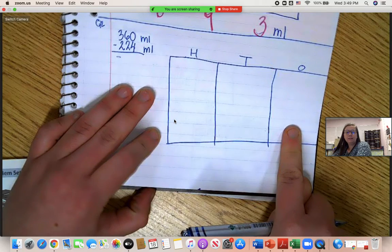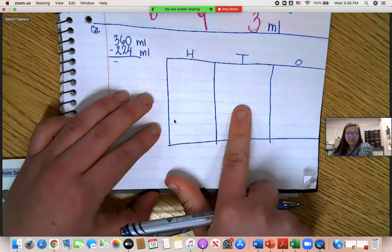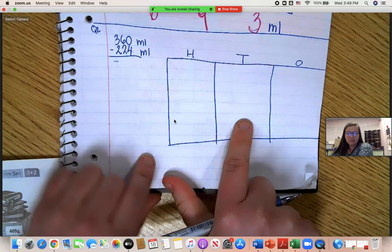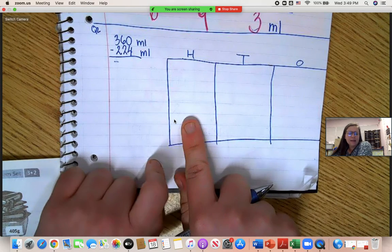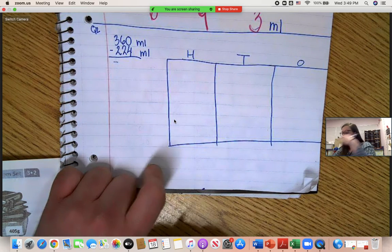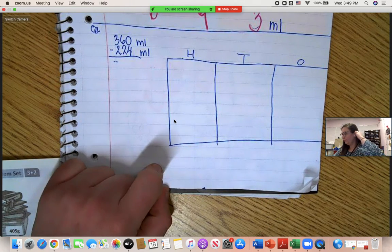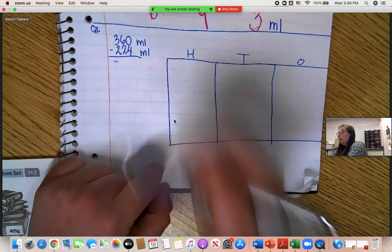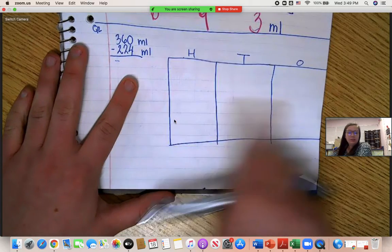Ten ones make a ten. Ten ones make a ten. Ten tens make a hundred. How many hundreds make a thousand? Ten. Ten. We regroup at ten. Okay. All right. Let's go ahead and do this one first.